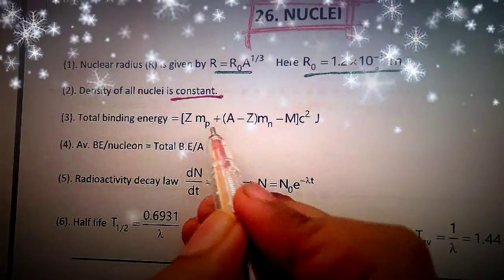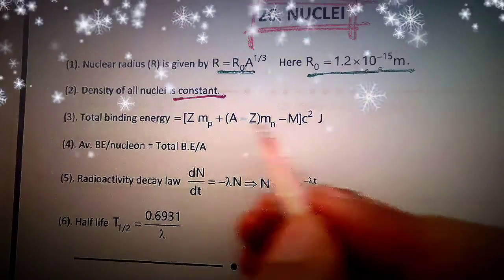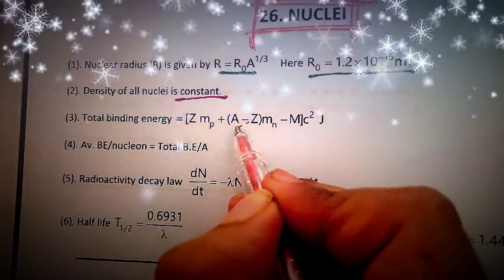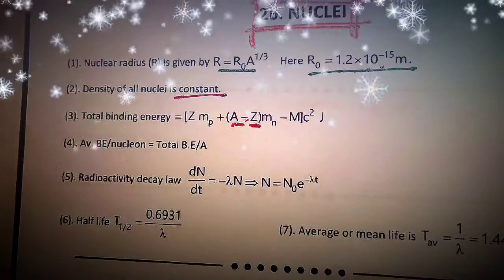Then, total binding energy is equal to Z M_p plus A minus Z M_n minus M c square. A is mass number and Z is atomic number.